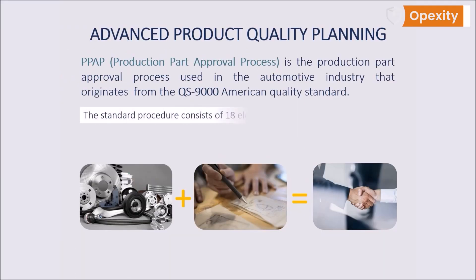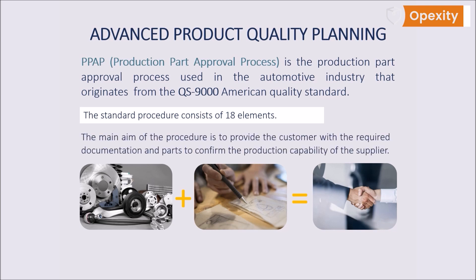The standard procedure consists of 18 elements. The main aim of the procedure is to provide the customer with the required documentation and parts to confirm the production capability of the supplier. PPAP is, therefore, a perfect tool for ensuring the quality and quantity of the parts supplied from such a wide supply chain.